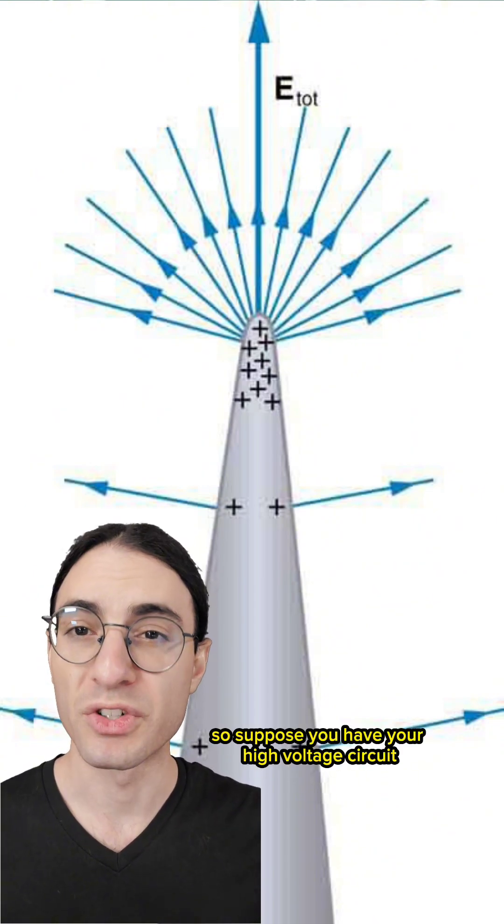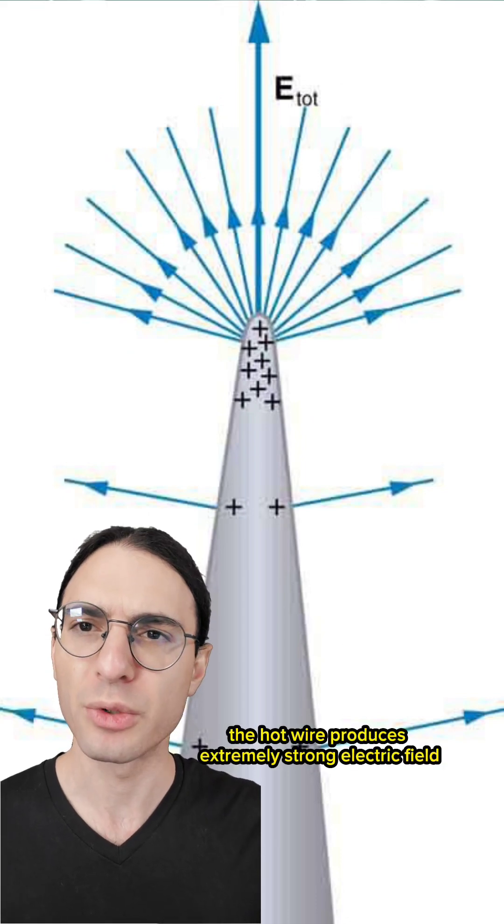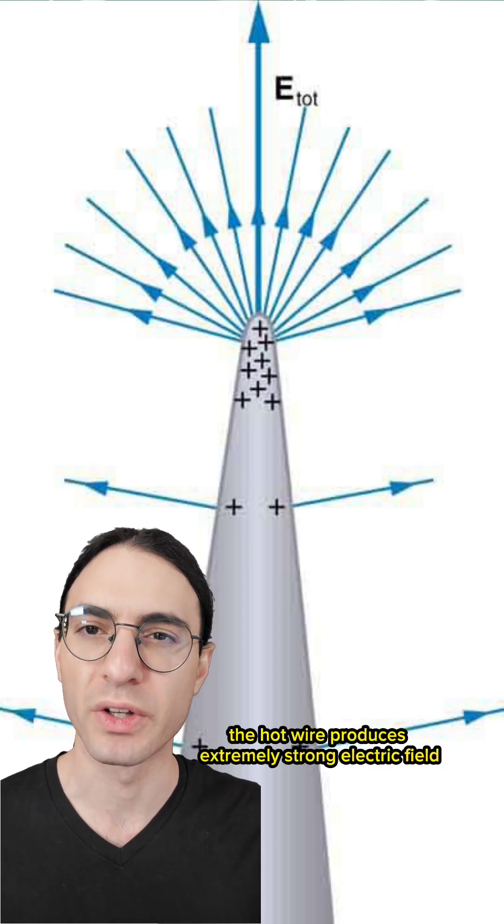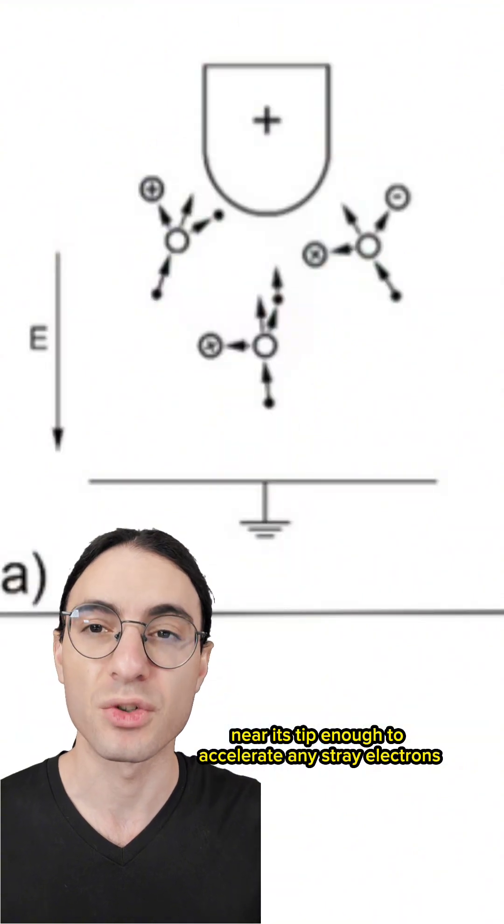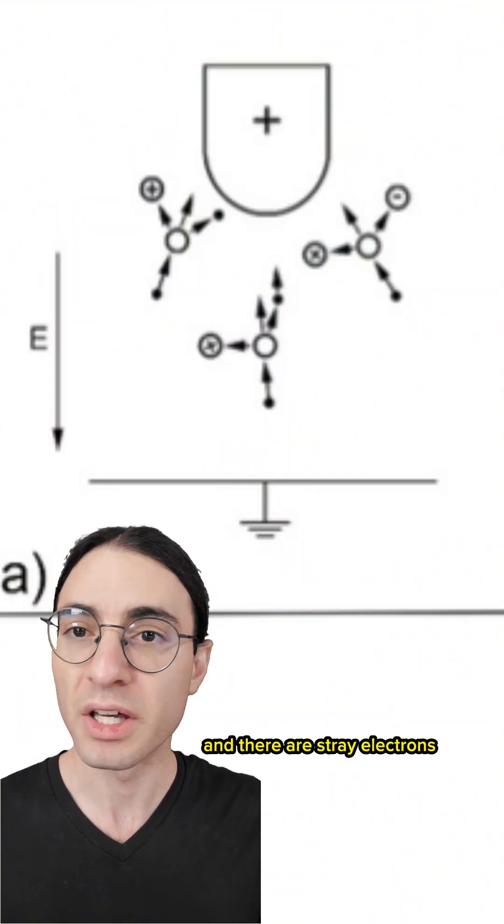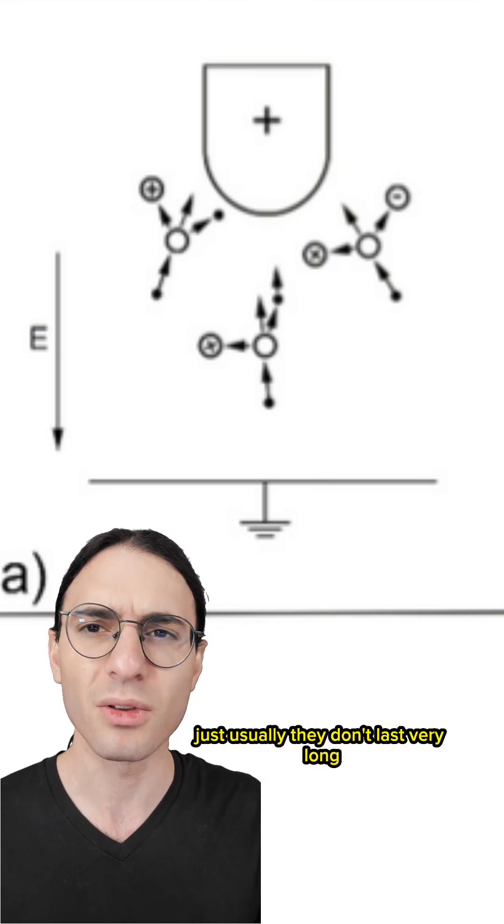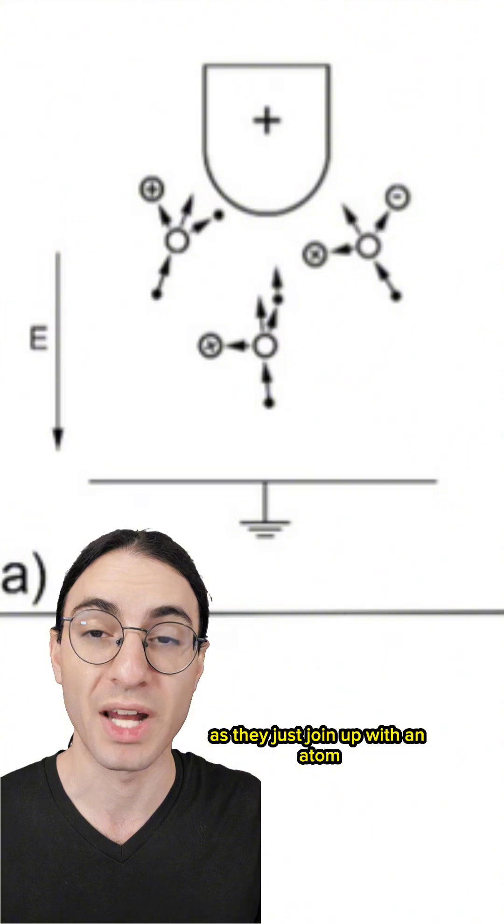So suppose you have your high-voltage circuit like I did. On one wire you have ground, and on the other, 15,000 volts. The hot wire produces extremely strong electric field near its tip, enough to accelerate any stray electrons that are wandering around through the air. And there are stray electrons. Cosmic rays strike Earth all the time, knocking electrons free all over the place. Just usually they don't last very long, as they just join up with an atom.